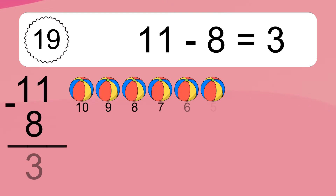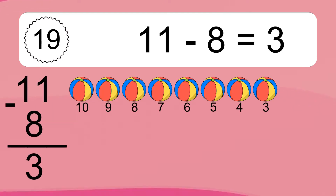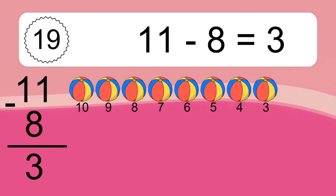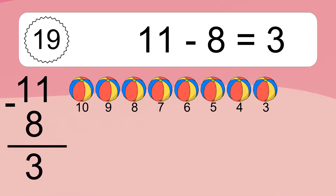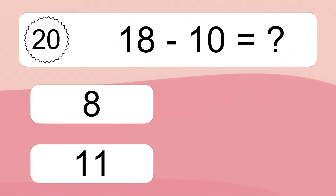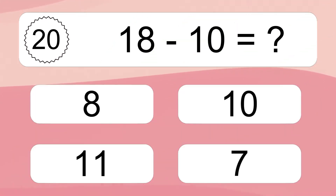11 minus 8 equals what? 11 minus 8 equals 3. Let's count it: 10, 9, 8, 7, 6, 5, 4, 3.